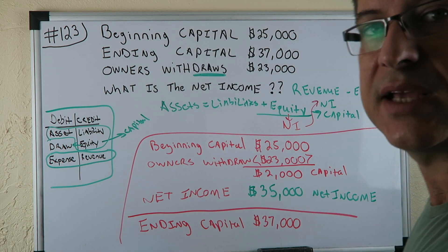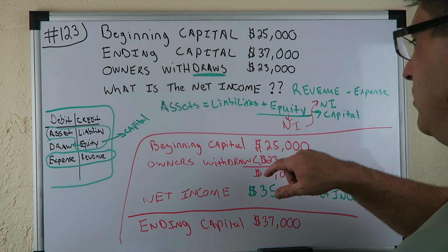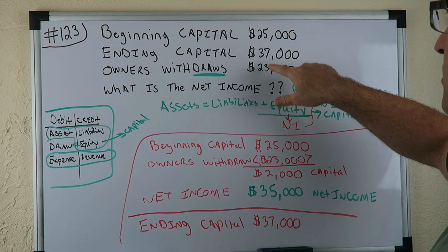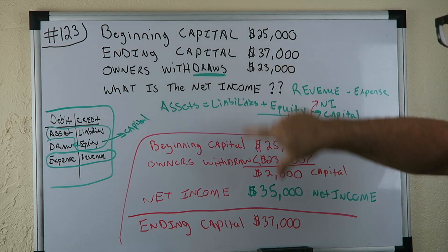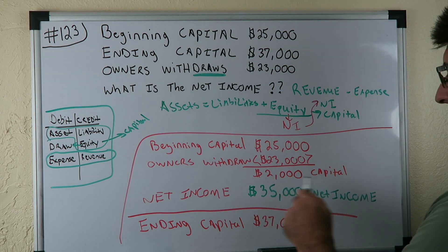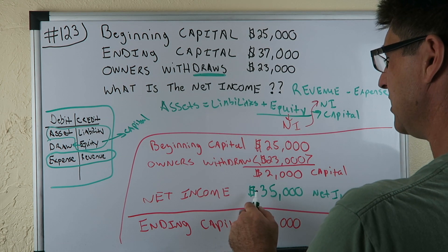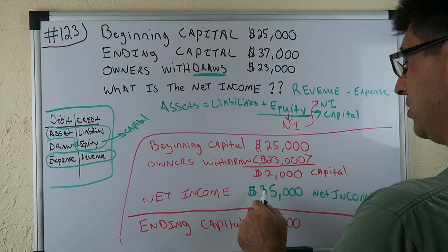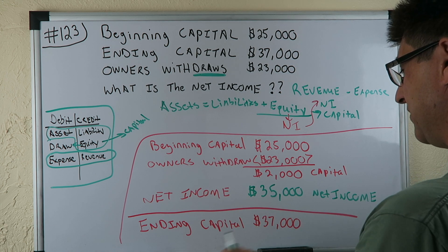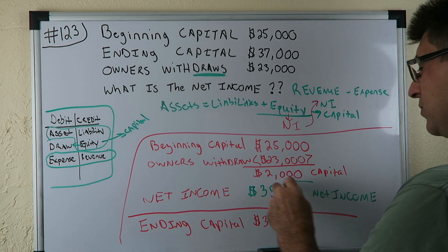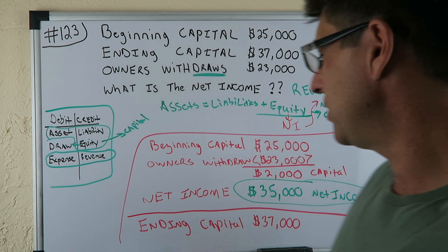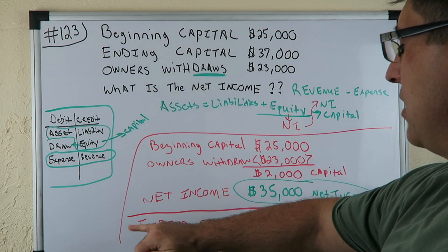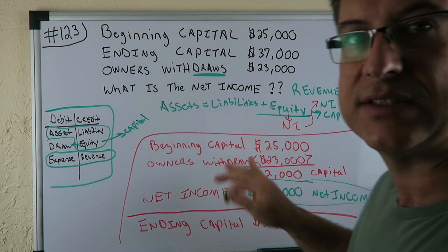Let's verify: started with twenty-five thousand, took a withdrawal of twenty-three thousand, leaving two thousand in equity capital. Then net income of thirty-five thousand gets added to the capital — thirty-five thousand plus two thousand equals thirty-seven thousand. That checks out. This is a plug problem — you see what you've got and plug it in, starting with the beginning and working through transactions to the ending.